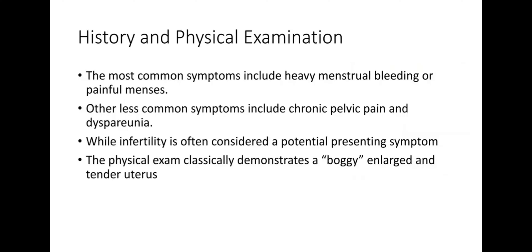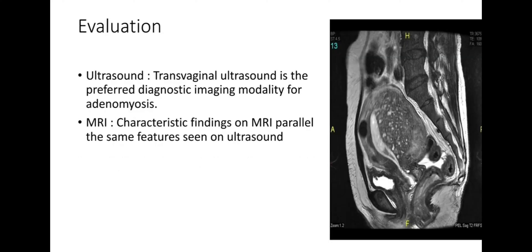On physical examination, there is demonstration of a boggy and enlarged uterus, due to the combined effects of increased vascularization from ectopic endometrial tissue and smooth muscle proliferation. A tender uterus is more common in adenomyosis. Regarding evaluation, lab evaluation is generally useful to rule out other diseases. Common evaluation for adenomyosis includes radiological assessment via ultrasound and MRI.